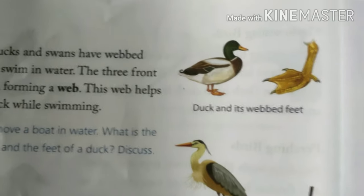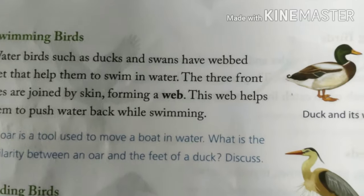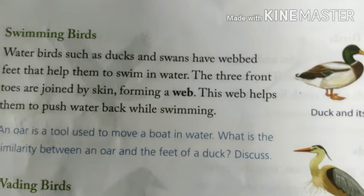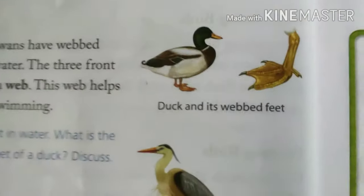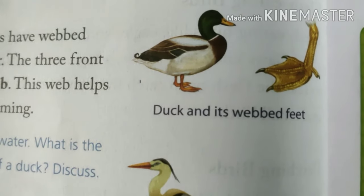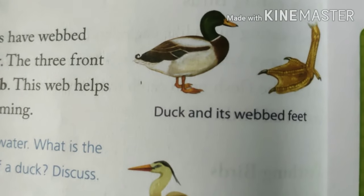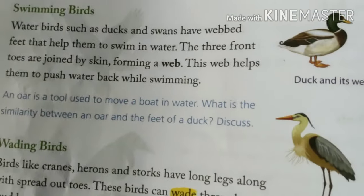Next we have swimming birds. Birds like duck and goose have very flat and broad feet. Water birds such as duck and swan have webbed feet that help them to swim in water. The claws are connected with a webbed structure, and this helps them to swim.